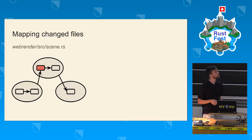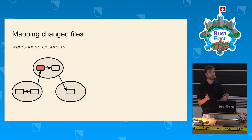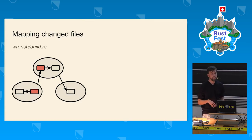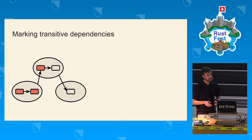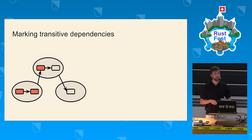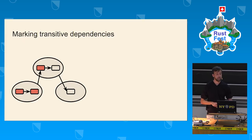We use a heuristic to map dirty files since the last successful analysis build to the appropriate package targets in the graph. For example, if we modify the WebRender library and then quickly modify the build script of Wrench, we mark both. After the build executes, we also mark all transitive dependencies, because modifying a build script may invalidate the binary that depends on it.